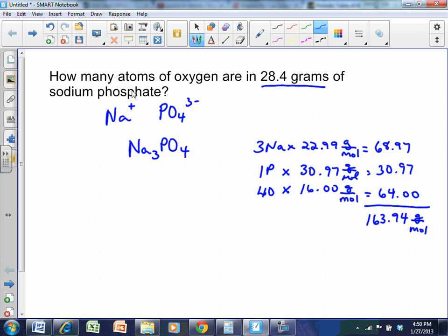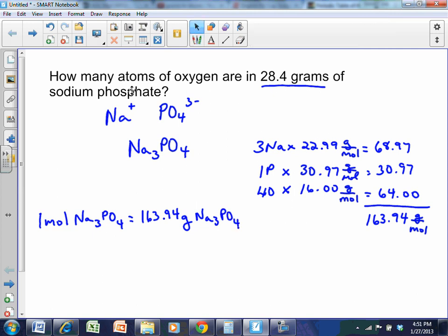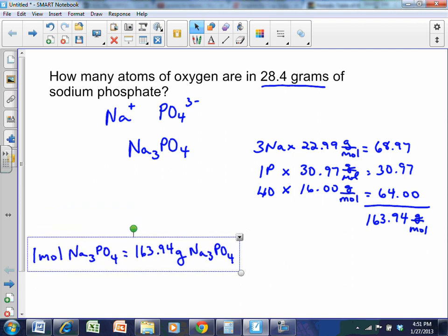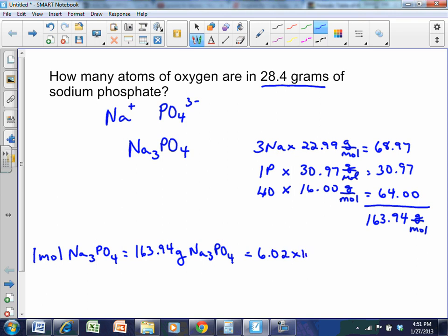What that means is one mole of Na3PO4 equals 163.94 grams of Na3PO4, and that equals 6.02 times 10 to the 23rd units. We say units because it's ionic, molecules if it's molecular.